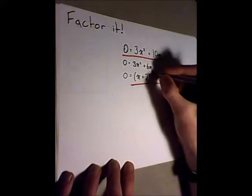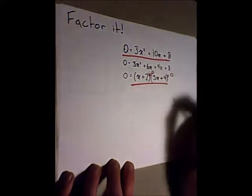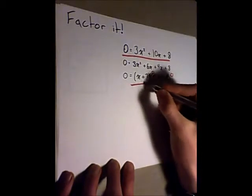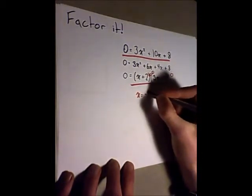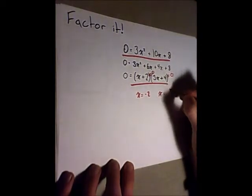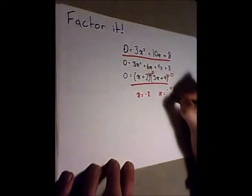From here, we can set these brackets to equal to 0. And we find that by calculating in this bracket for it to equal 0, we have x equals negative 2. In this bracket we have x equals negative 4 over 3.